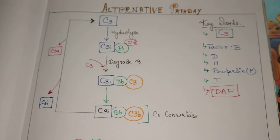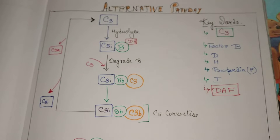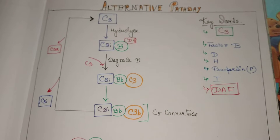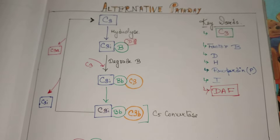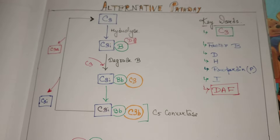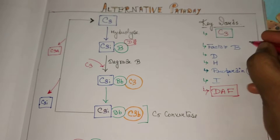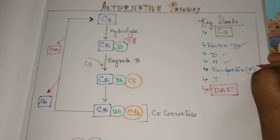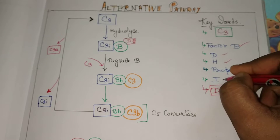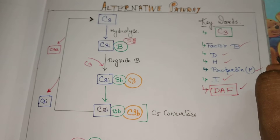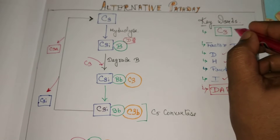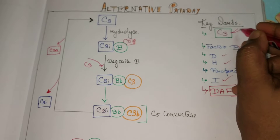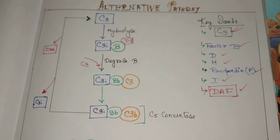The major keywords of this pathway are: C3, Factor B, Factor D, Factor H, Properdin or P, Factor I, and DAF protein.